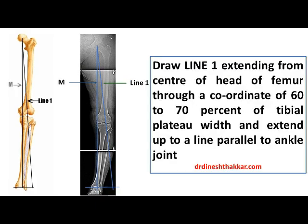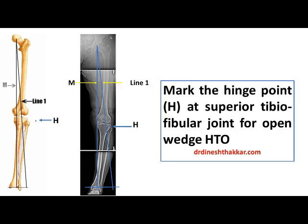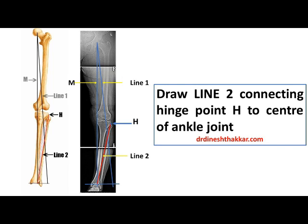The next step is to draw Line 1 extending from the center of the head of femur through a coordinate of 60 to 70 percent of the tibial plateau width, and extend it up to the line parallel to the ankle joint. Now mark the hinge point H of the osteotomy, which is the superior tibiofibular joint for open wedge osteotomy.